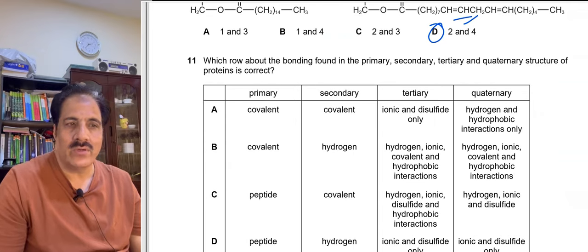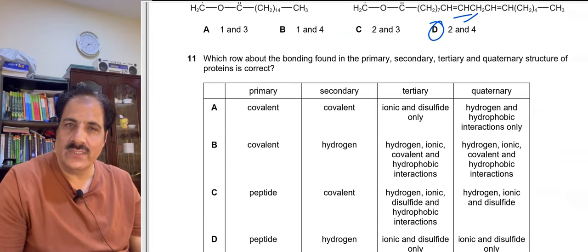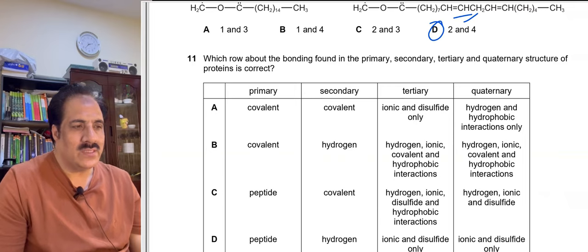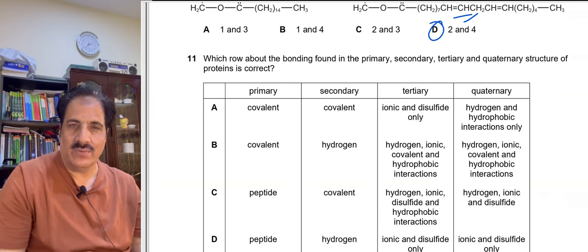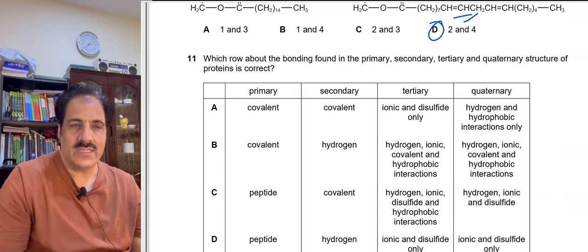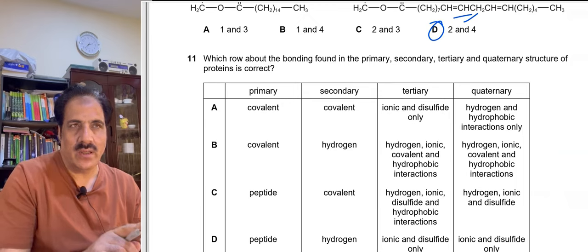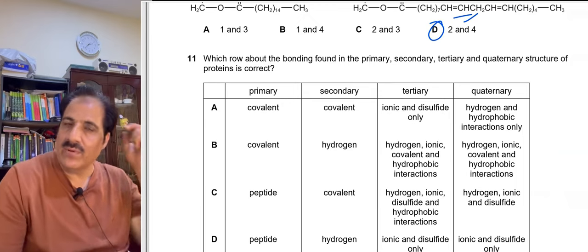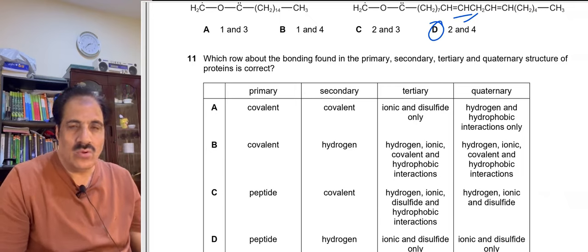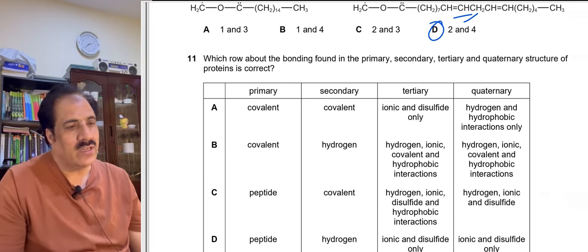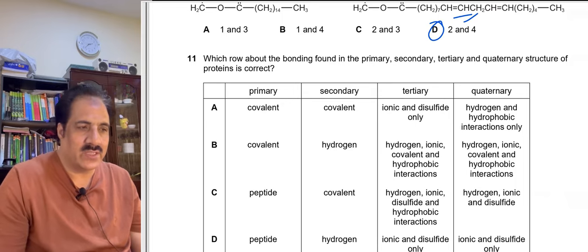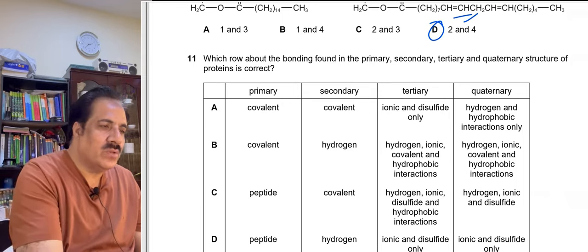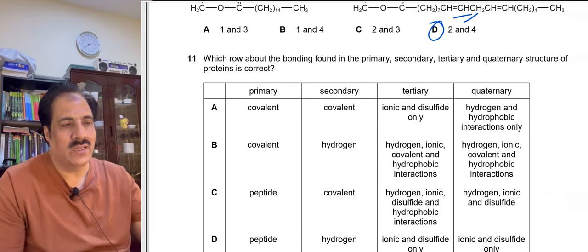Question 11: Which statement about bonding in primary, secondary, tertiary, and quaternary protein structures is correct? Primary structures contain covalent bonds, as the peptide bond is covalent. Secondary structures are held by hydrogen bonds, not covalent bonds. Tertiary and quaternary structures contain all bond types: hydrogen, ionic, covalent, and hydrophobic interactions. Therefore option B is the only correct option.